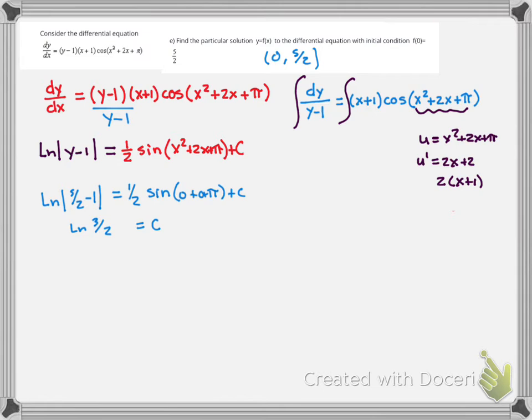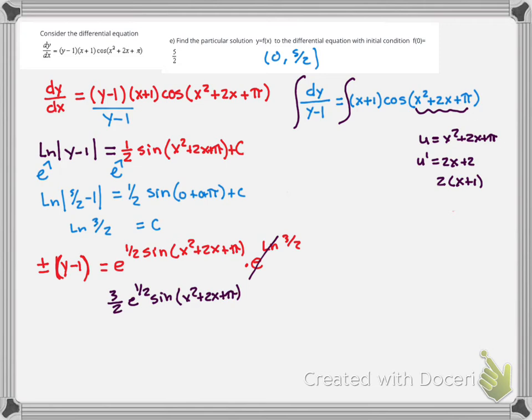Now we'll exponentiate: e to the ln and e to the 1 half of all this. This becomes plus or minus y minus 1. We'll break this absolute value and add the plus or minus. This equals e to the 1 half sine of x squared plus 2x plus pi times e to the ln of 3 over 2, which gives us 3 halves e to the 1 half sine of x squared plus 2x plus pi.